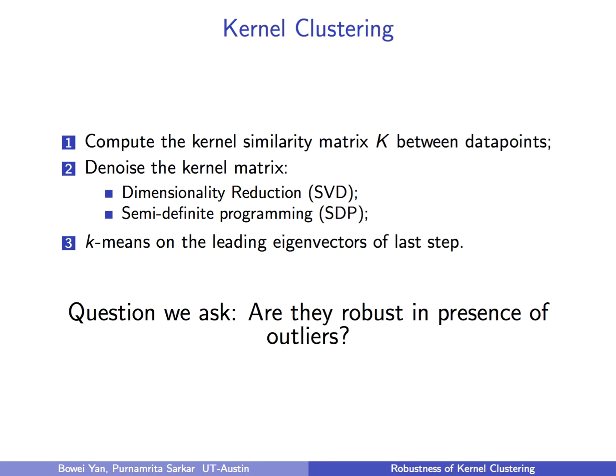First, one computes a kernel similarity matrix, then applies either a dimensionality reduction such as singular value decomposition, or a semi-definite relaxation to get a denoised matrix. Finally, one runs k-means on the leading eigenvector of the denoised matrix from the last step.